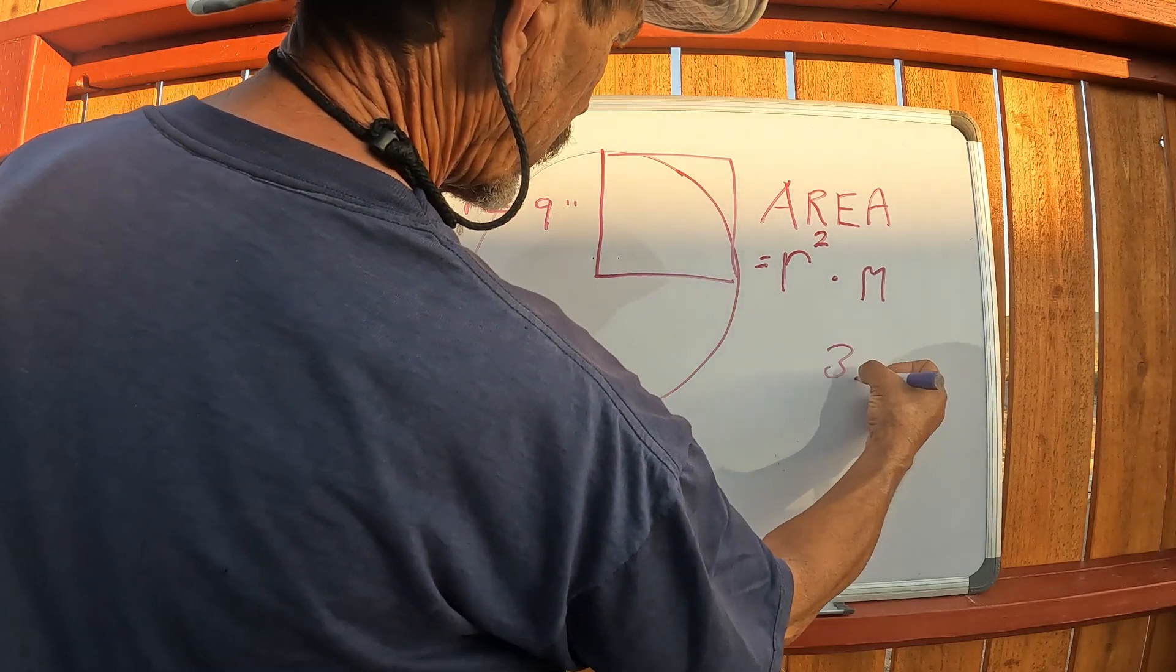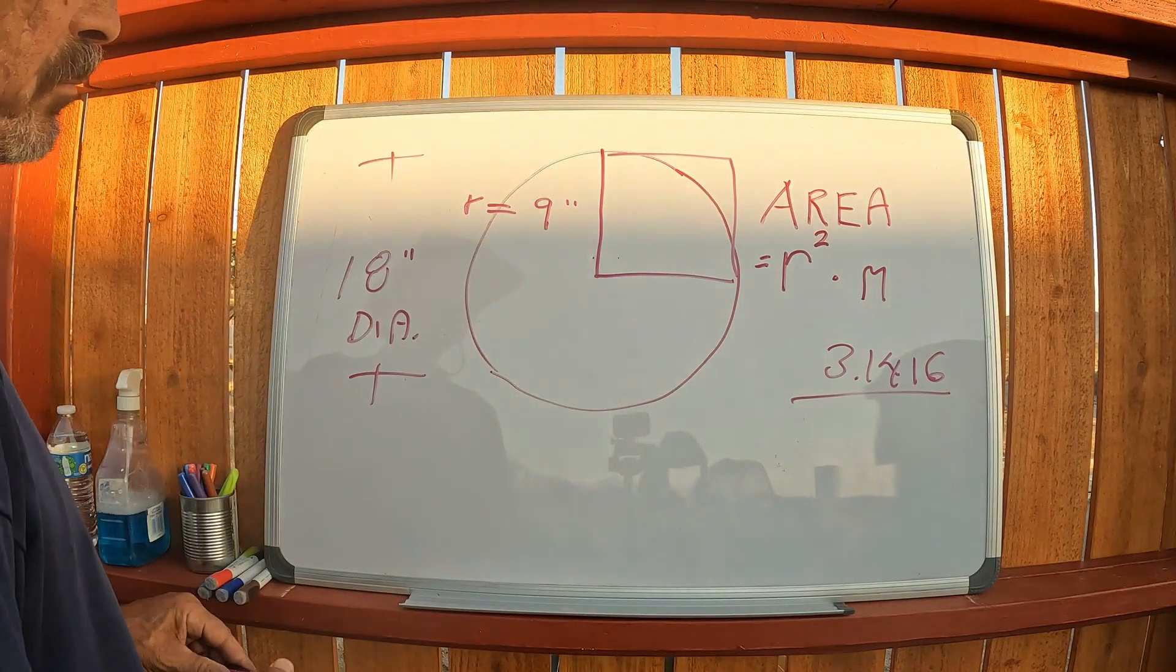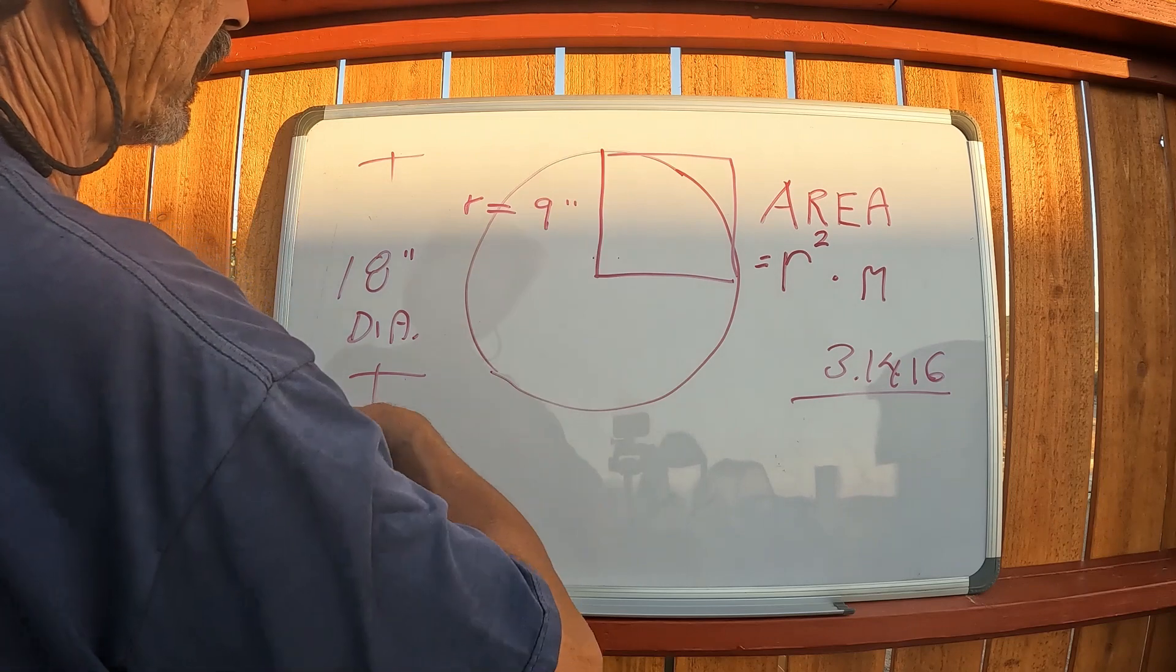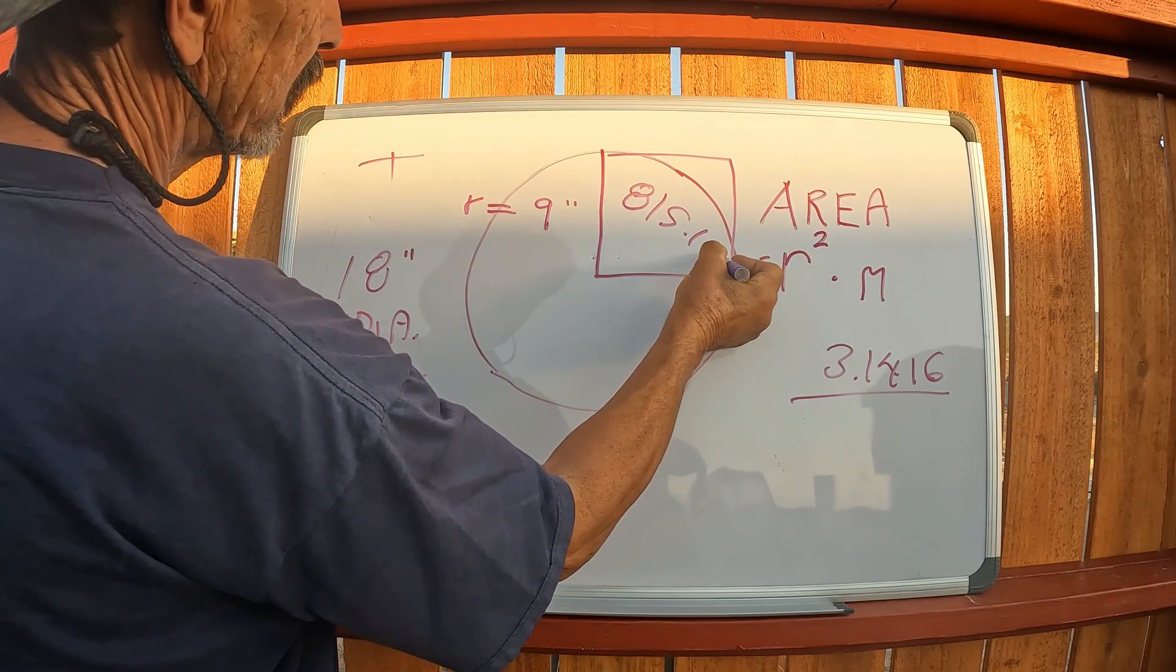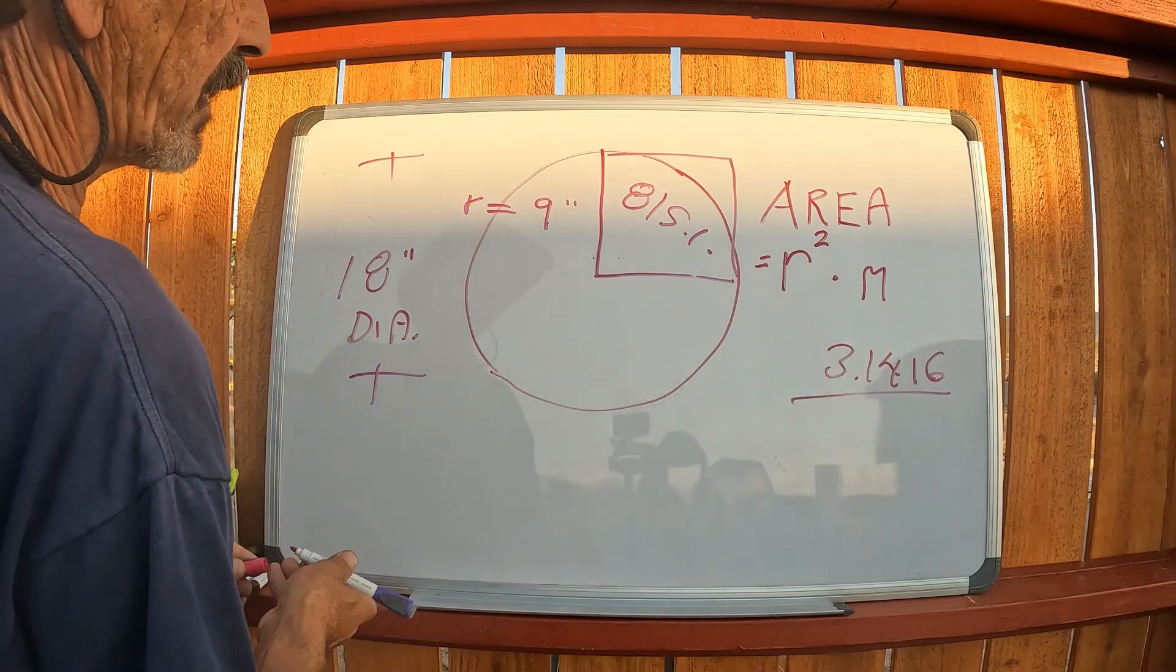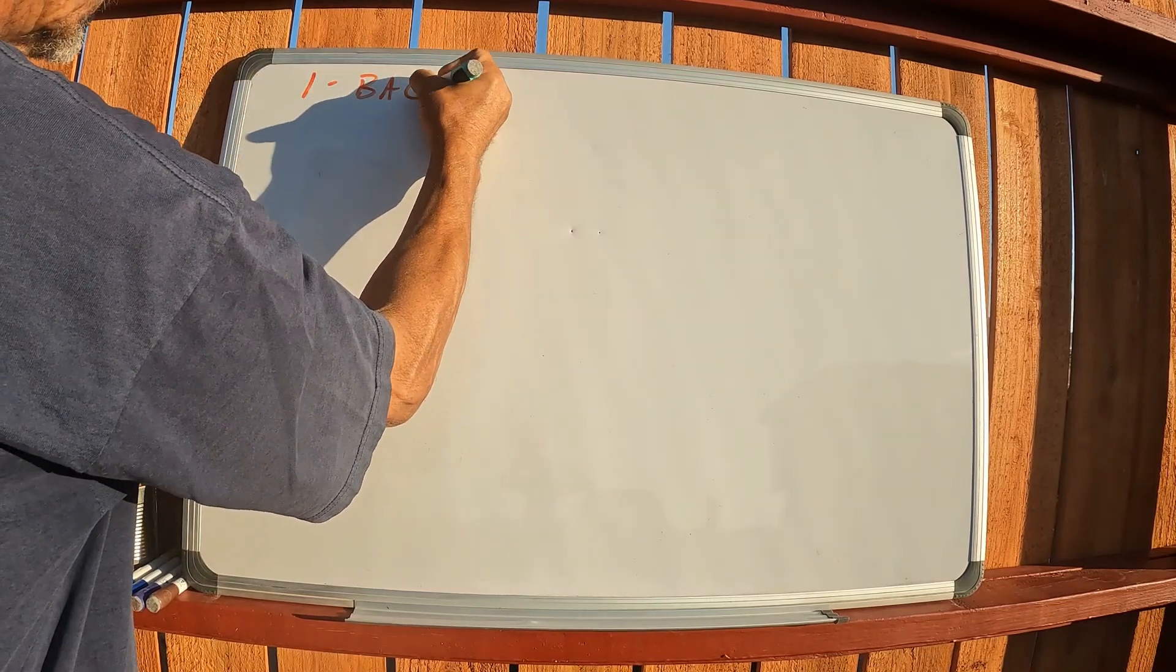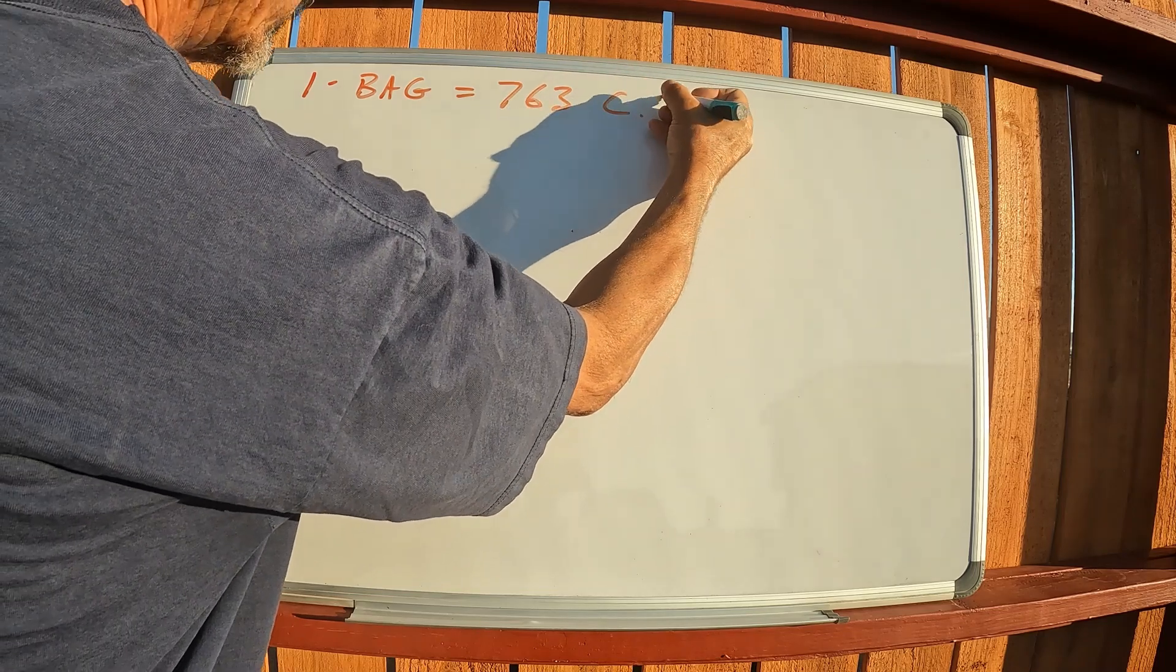Pi 3.1416 close enough, and that's a real basic radius squared, 9 times 9, 81 times 3.14159. So from that formula, one bag equals 763 cubic inches.